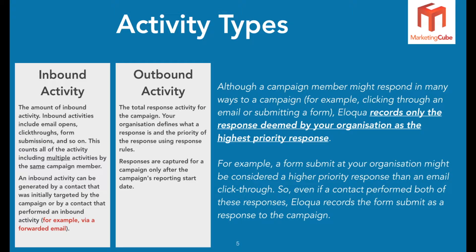So from your point of view as an organization, if email opens are important you can rank that as number one. If clicking through on an email is far more important to your organization, you can deem that as number one. Or perhaps a form submission is number one. There are several options available to you - it's simply up to you as an organization to determine what has the greatest value.